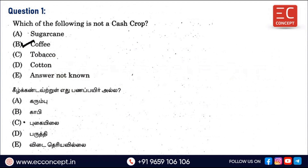Which of the following is not a cash crop? Sugar cane is one. Tobacco is one. Then coffee is also mentioned.